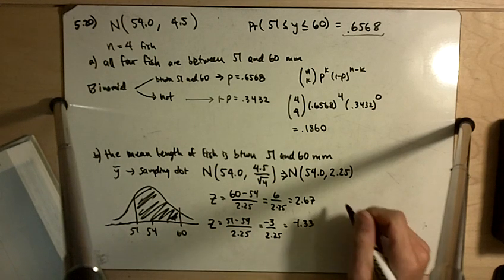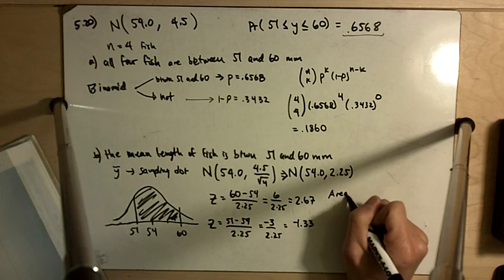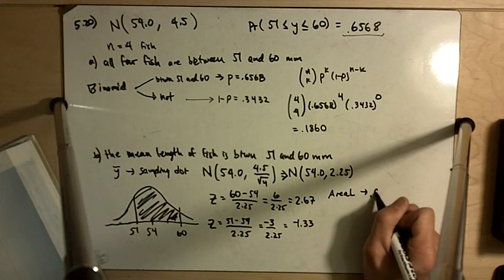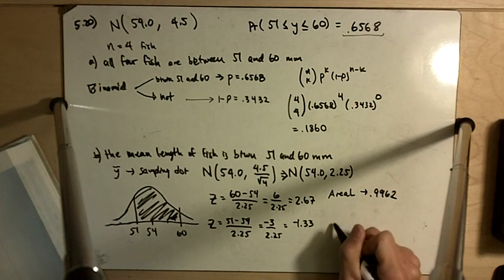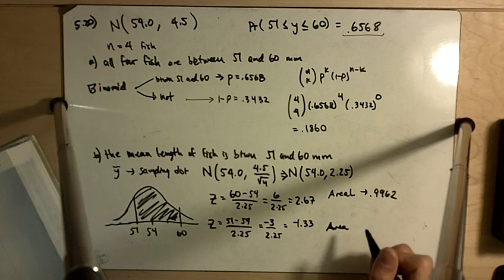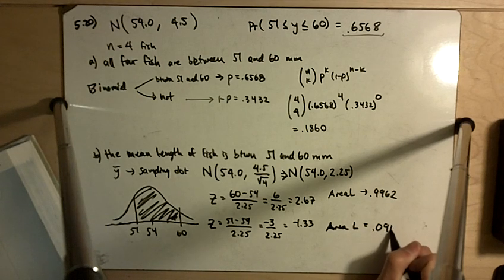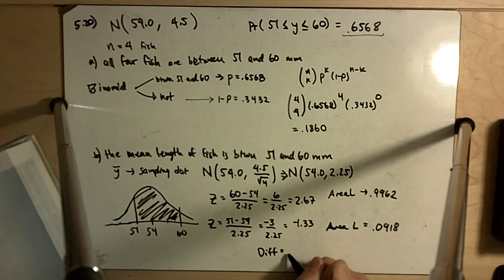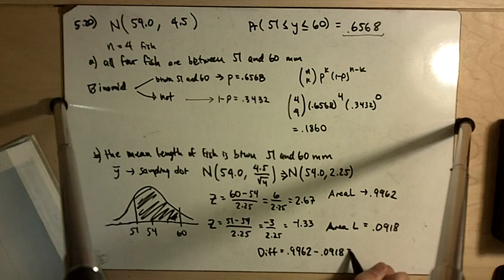And we want to know the area in between. So the area to the left of 2.67 corresponds to 0.9962. And the area to the left of negative 1.33 is 0.0918. And so the difference there is equal to 0.9044.